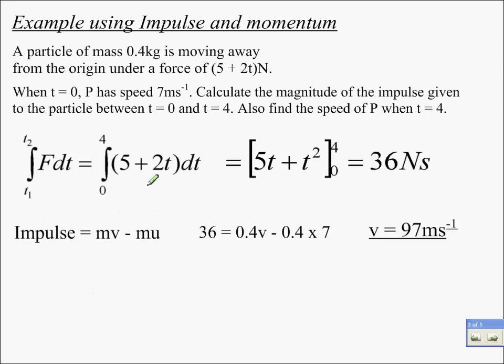Right, impulse and momentum. So, example here, we have a force of 5 plus 2t newtons, a mass of 0.4. Initial conditions when t is 0, p is 7 metres per second. Calculate magnitude of the impulse given between t is 0 and t is 4. So impulse is the integral of the, oh, that should be F of t there, the integral of the force's function of time with respect to t between the 2 times it's acting on the object 4. So,